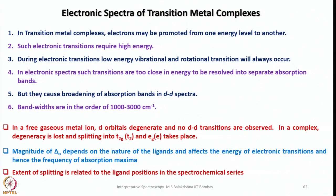In electronic spectra of transition metal complexes, electrons are excited from the ground state to one of the excited states. Such electronic transitions require high energy compared to other transitions. During electronic transition, we also come across low energy vibrational and rotational transitions, because each electronic level is associated with several vibrational levels, which in turn are associated with several rotational levels.